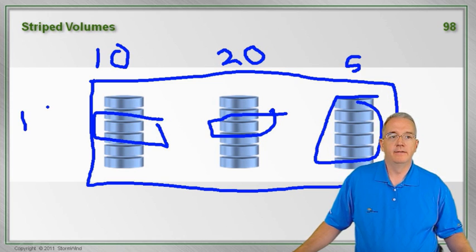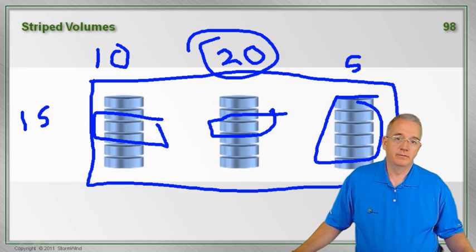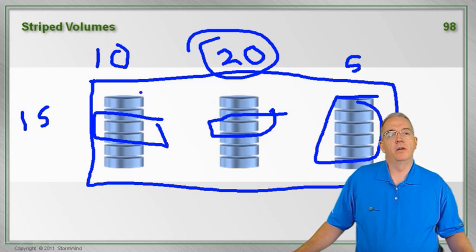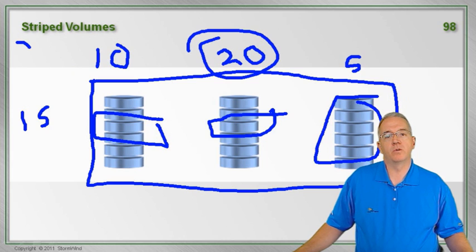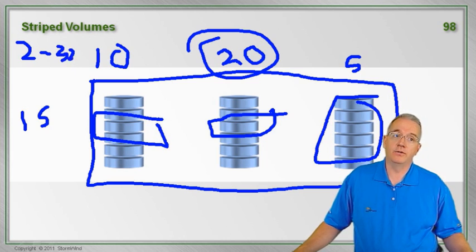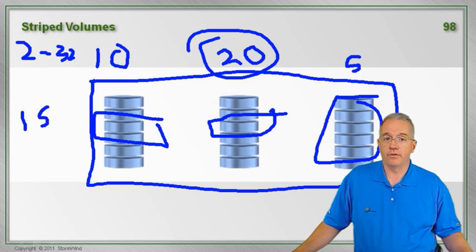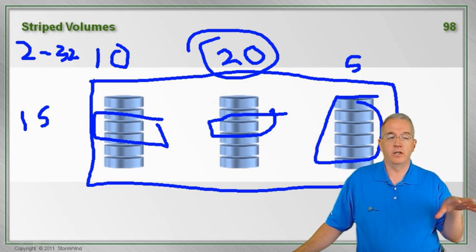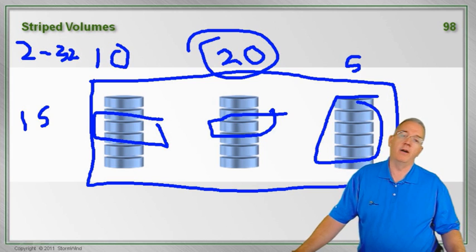Uh-oh, that's only 15 gig. Heck, I got more just by taking this one drive. Well, that's okay. Realize that when you're doing stripe sets, it's between 2 and 32 drives that you can use. You don't have to use all the drives, but you can go anywhere from 2 to 32.